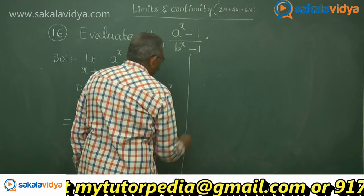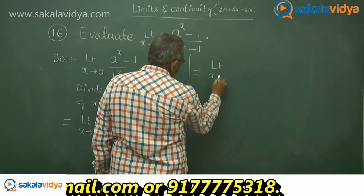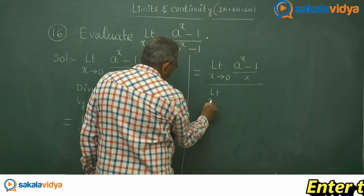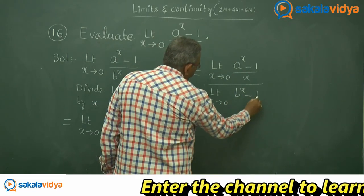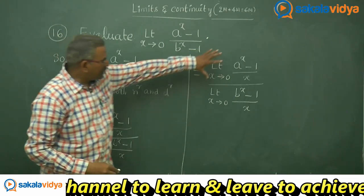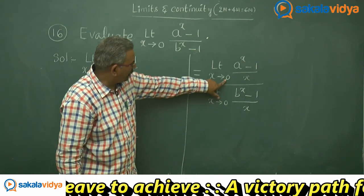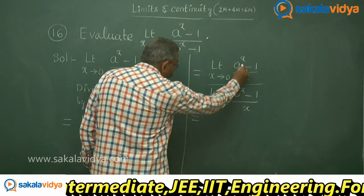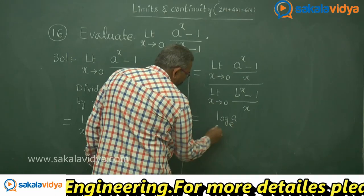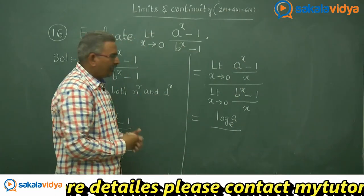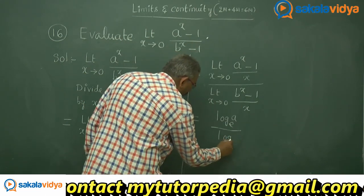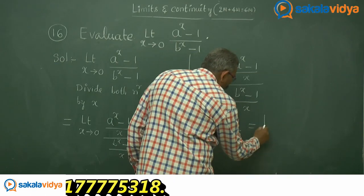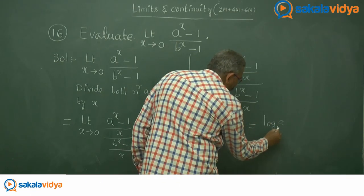We can write this as: lim(x→0) (aˣ - 1)/x divided by lim(x→0) (bˣ - 1)/x. Using the formula that lim(x→0) (aˣ - 1)/x = log a to the base e, the numerator gives log a to the base e. For the denominator, instead of a, b is there, so it gives log b to the base e. Therefore, log a / log b equals log a to the base b. This is the answer.